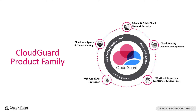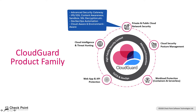The first one is private and public cloud network security. This is basically our Next-Gen firewall in a virtualized form. The image is optimized for multi-cloud environments, so you have a security gateway sitting in front of your application servers on the cloud, inspecting East-West and North-South traffic. You can have features such as IPS, IDS, SSL decryption, and sandboxing.